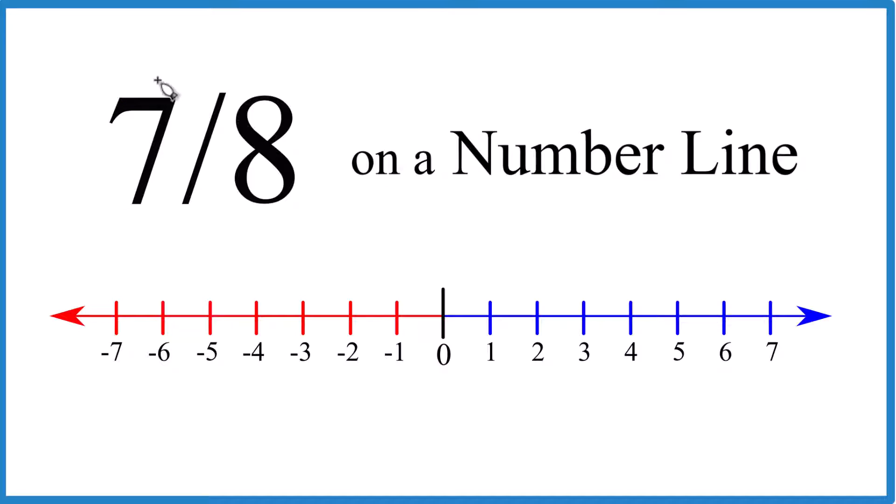We know that it's positive, so that means it's going to be on this side of our number line here, on the positive side. And we know that seven is smaller than eight. So when we divide seven by eight, we're going to get a number less than one.